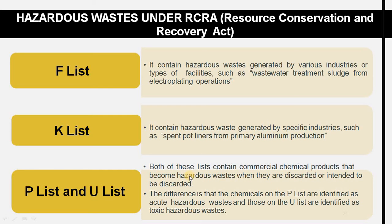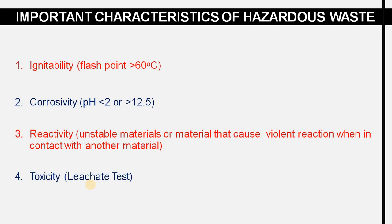The difference is that chemicals on the P list are identified as acute hazardous waste, while those on the U list are identified as toxic hazardous waste. So we have seen the F list, K list, P list, and U list which are under the RCRA.